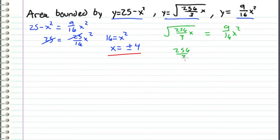we get 256 over 3x equals 81 over 256 x to the fourth. We can rearrange this to 81 over 256 x to the third minus 256 over 3, and that quantity times x. I just factored out the x and moved this term to the other side. So this is going to equal zero.